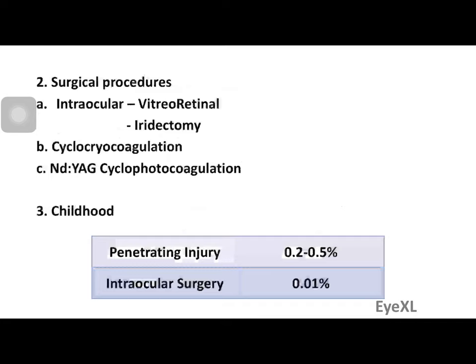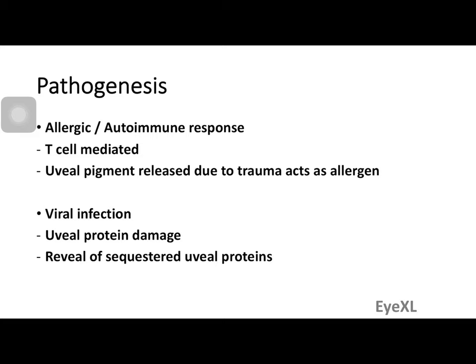Childhood is a risk factor — children are more likely to develop sympathetic ophthalmitis compared to adults because children usually have a stronger immune response to trivial trauma. The incidence of sympathetic ophthalmitis after penetrating injury is 0.2 to 0.5 percent, and after intraocular surgeries is 0.01 percent on average. Penetrating injuries are obviously much more commonly associated with progression to sympathetic ophthalmitis.